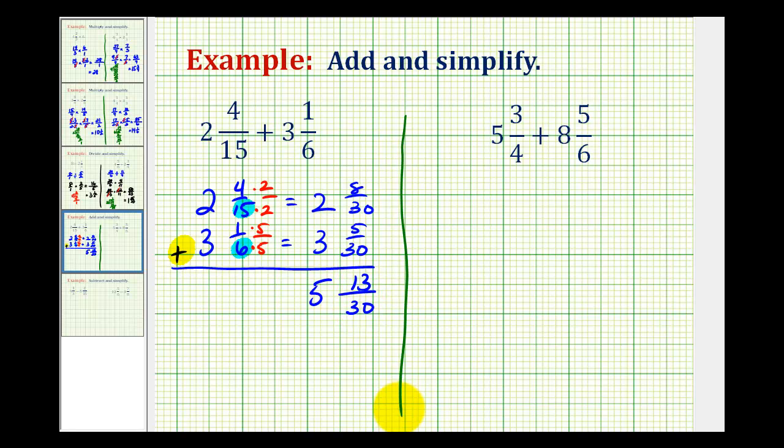Let's take a look at a second example. Again, the first step is to write this vertically. So we have five and three-fourths plus eight and five-sixths.